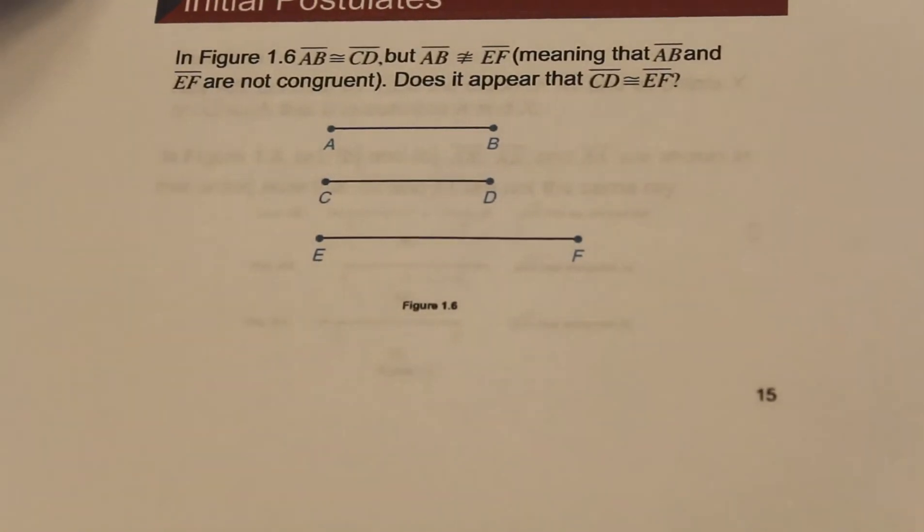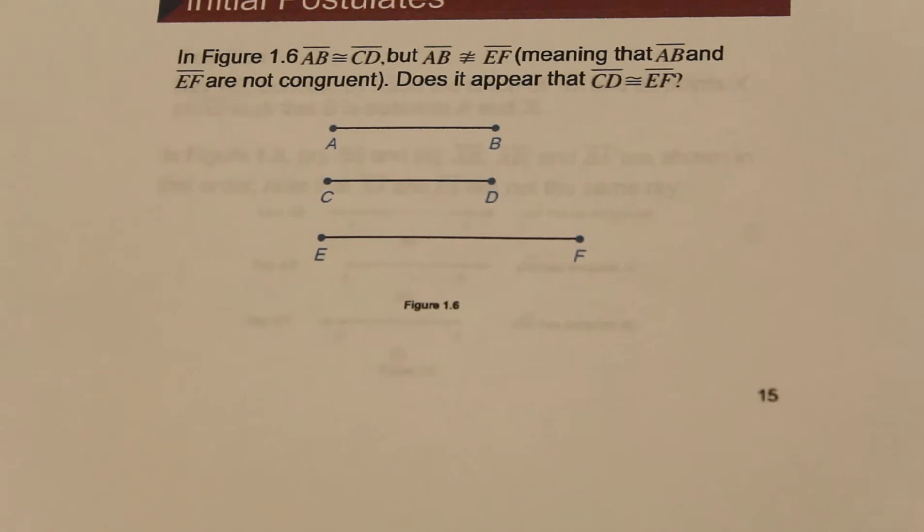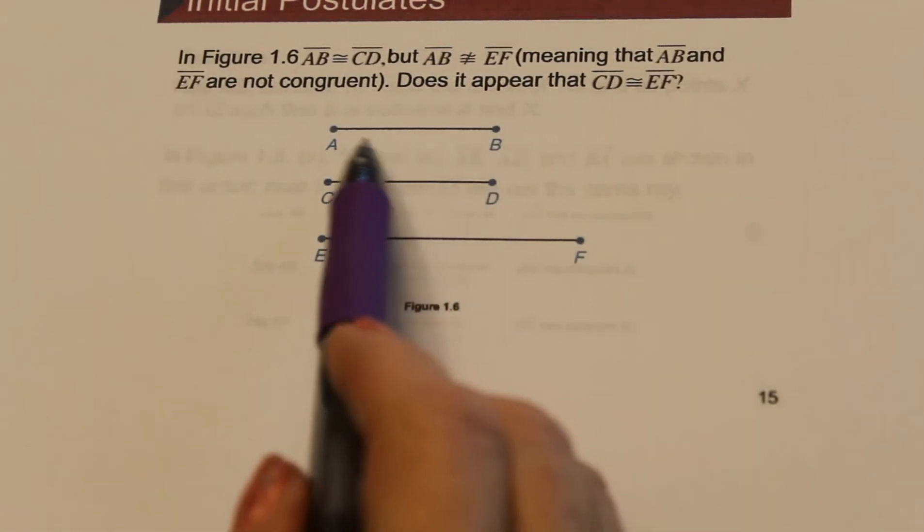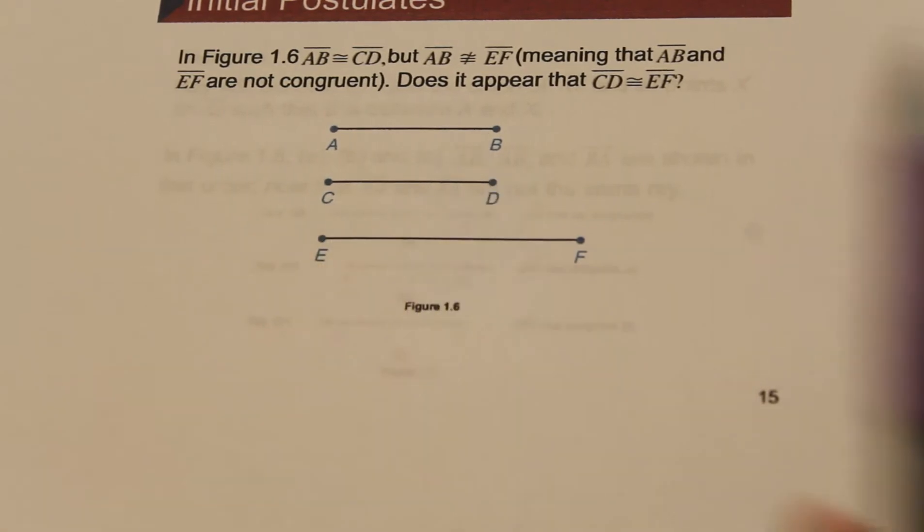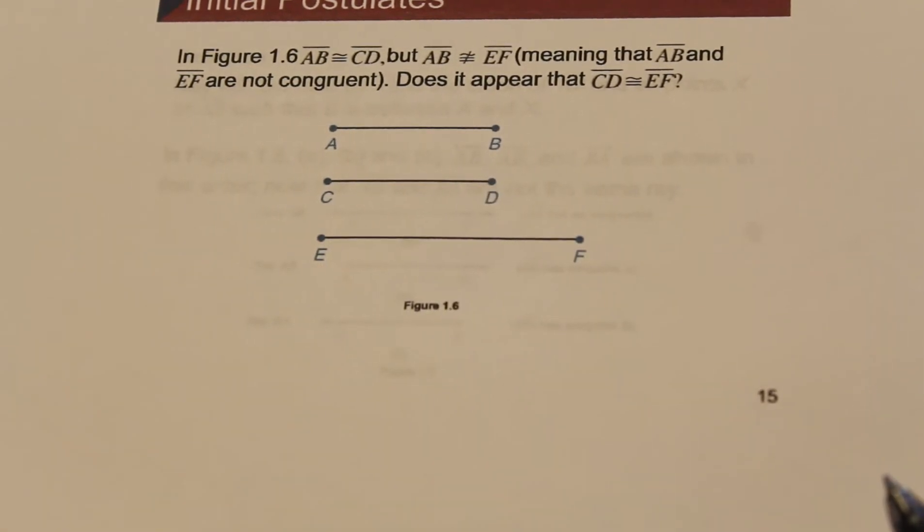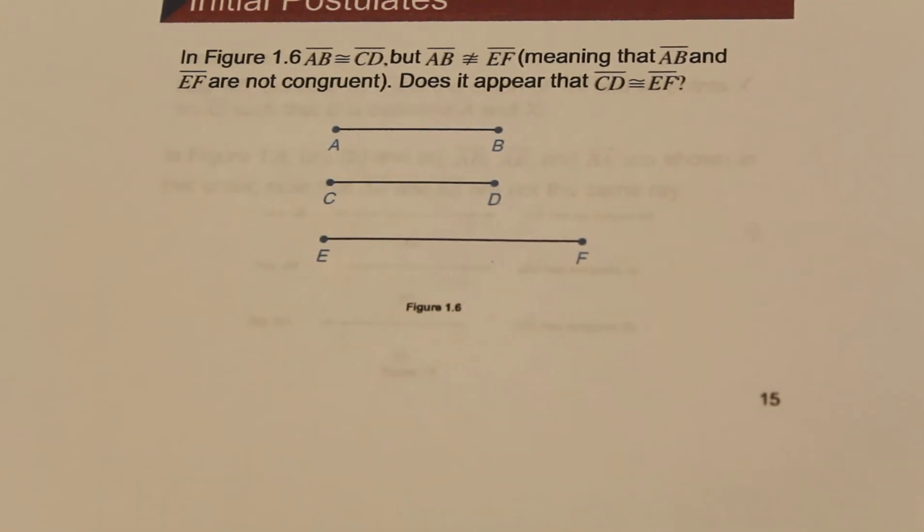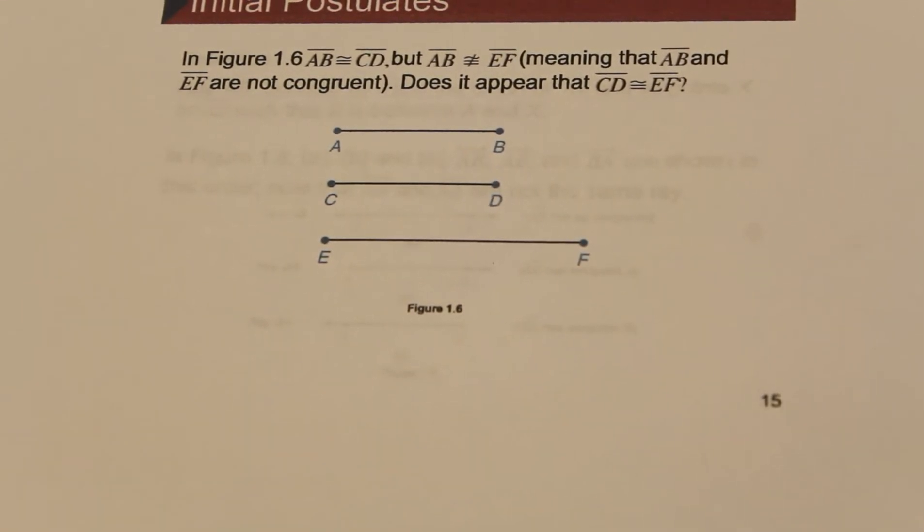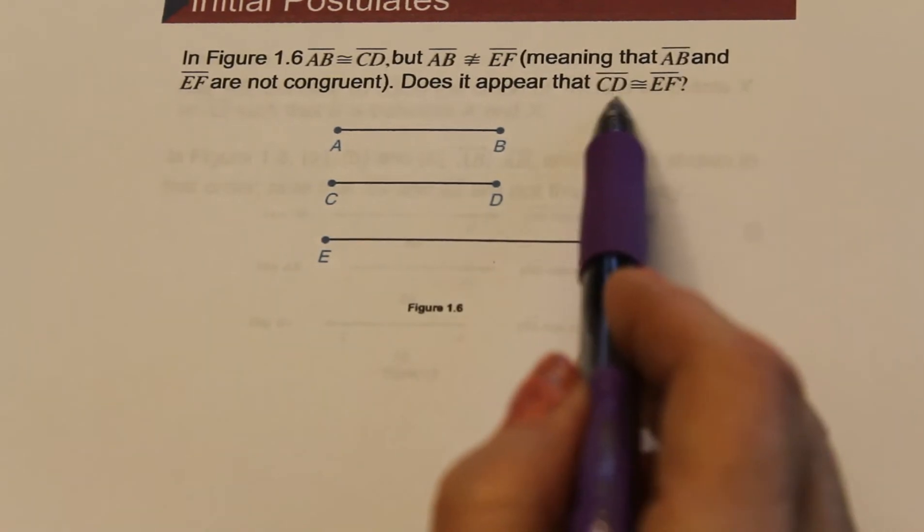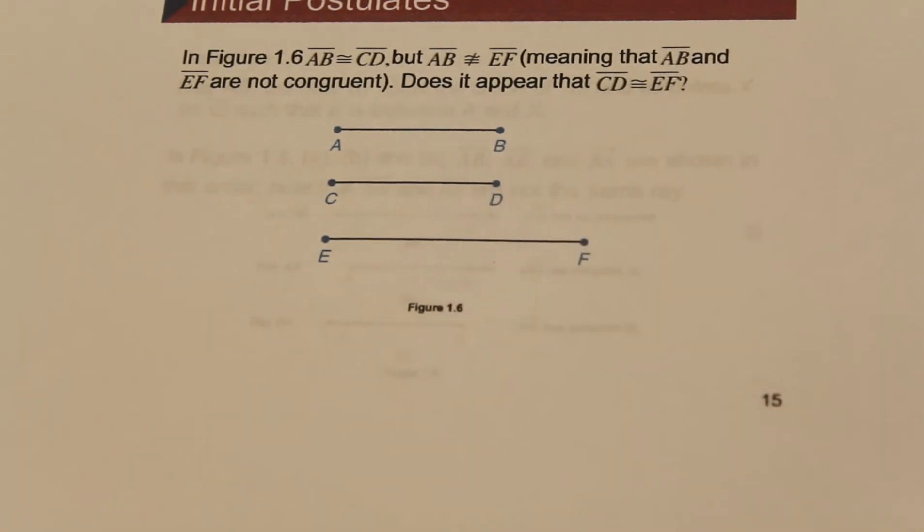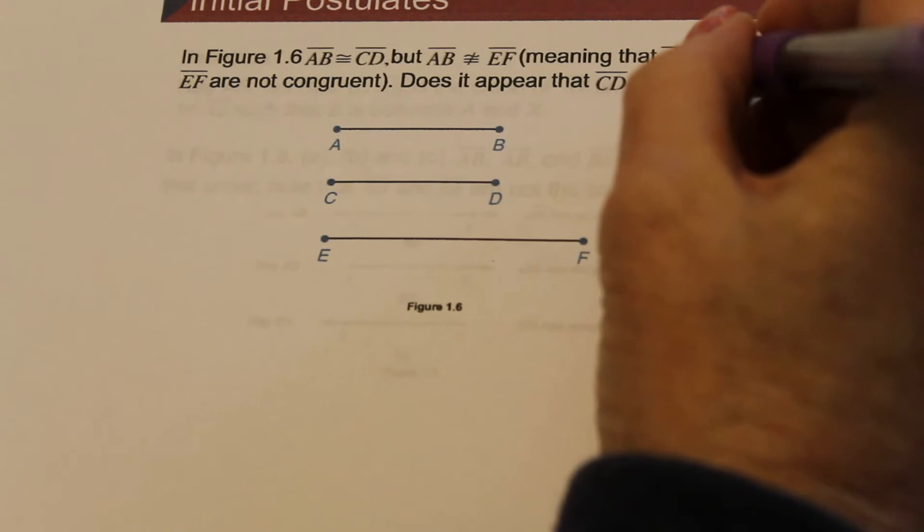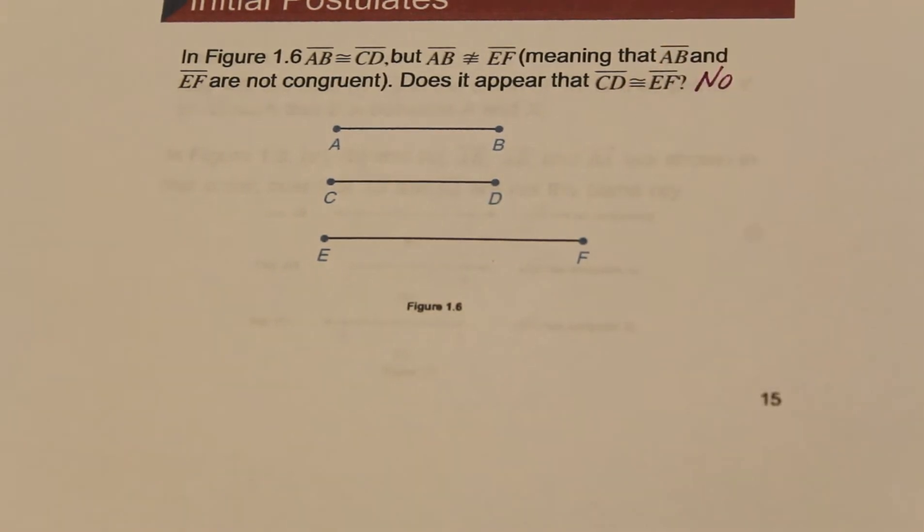And here we have an example of segment AB, segment CD, and segment EF. So in this figure, we are told that segment AB is congruent with segment CD, but segment AB is not congruent with EF, meaning they do not have the same length. So do you think segment CD is going to be congruent with EF? We would say no, it does not appear they're congruent. They don't look like they have the same length.